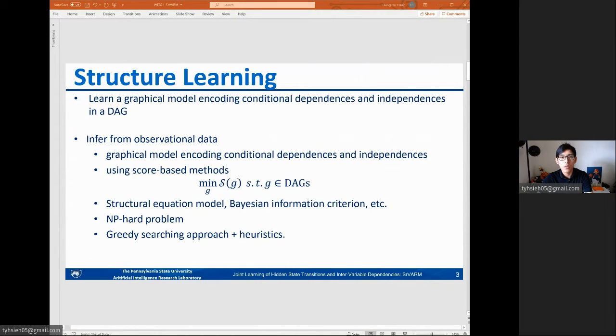Given the abundance of observational data in the big data era, structure learning from observational data is an important research topic and has continued to gain research attention. In the vast literature, score-based methods are popular choices for structure learning from observational data. The objective of the score-based methods is to minimize a scoring function, which measures goodness of fit of the graph, subject to the graph being a directed acyclic graph. Although mature scoring functions have been proposed, solving the objective function is a very hard problem because of the combinatorial nature of the DAG constraints, and the search space grows fast with respect to the number of variables or number of nodes in the graph.